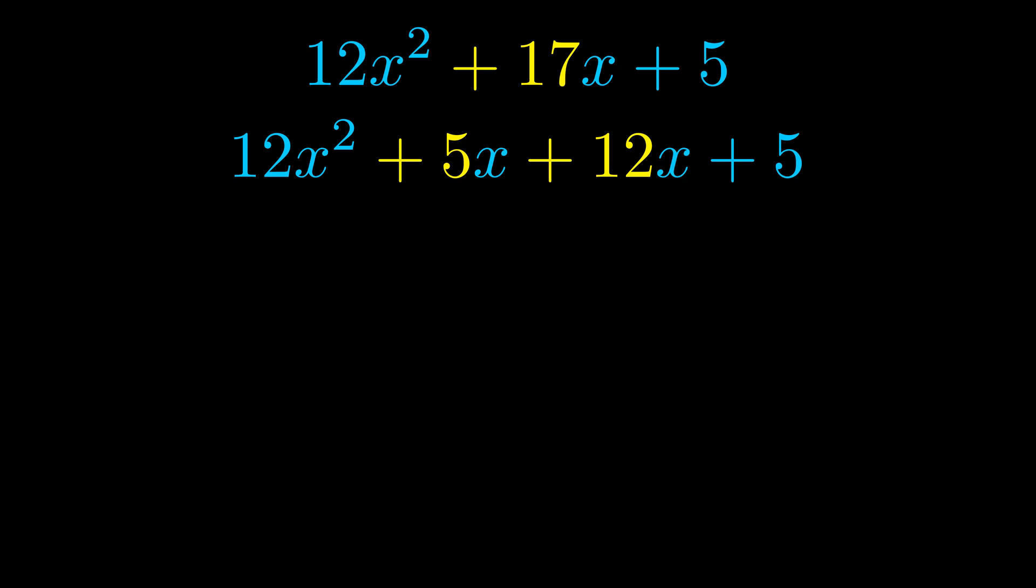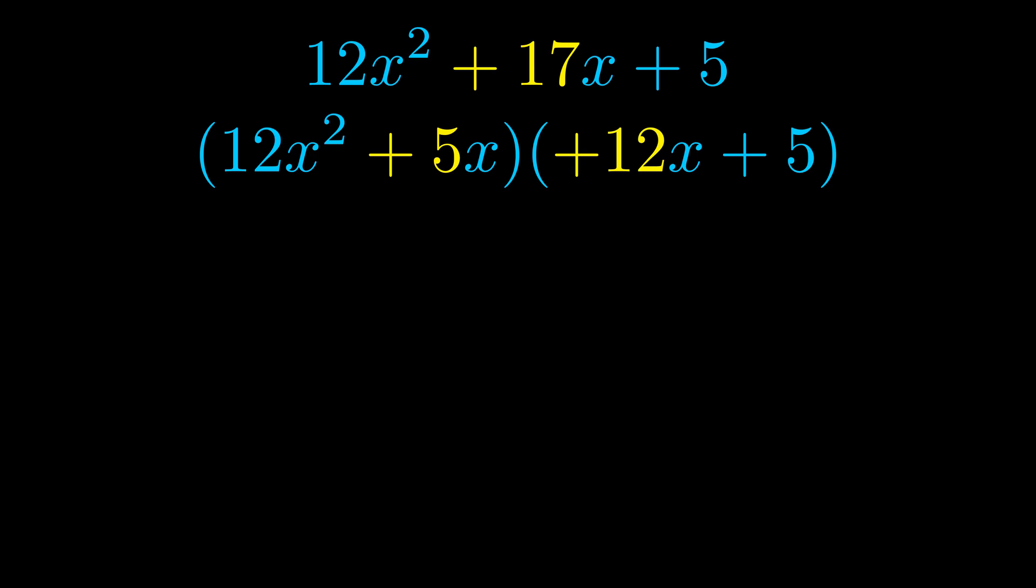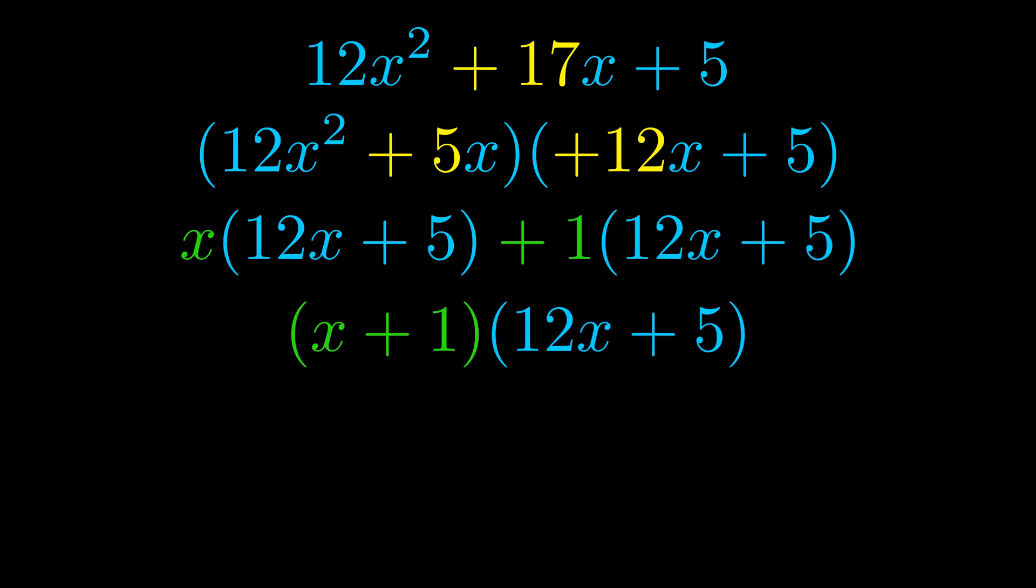Once we've done this we go ahead and we put parentheses around the first term in the last term. And we do that so that we can take the greatest common factor out of both terms. We can see the greatest common factor is now outside in green. Notice also how what remains inside of the parentheses is the same in both cases. The blue values are the same. Those blue values will become one of our factors and we will combine the two green values the GCFs that we pulled out to get the other one. And that is our fully factored equation.